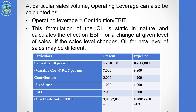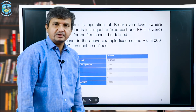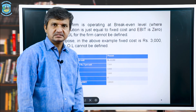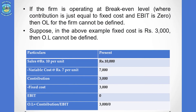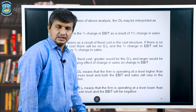One more point: what happens if the firm is operating at breakeven? At breakeven, contribution just equals fixed cost and EBIT is zero. For example, if sales are 10,000, variable cost is 7,000, contribution is 3,000, and fixed cost is also 3,000, then EBIT is zero. In such a case, when EBIT is zero, operating leverage cannot be defined.